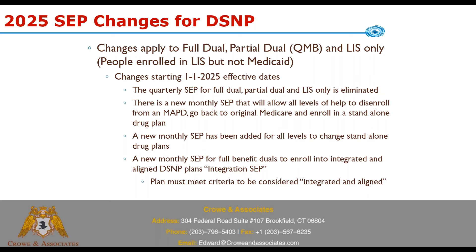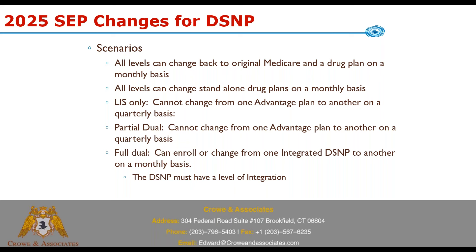There's also a new monthly SEP for full benefit duals to enroll into integrated and aligned D-SNP plans — they call it the Integration SEP. With that SEP you can take somebody who's a full dual and move them into a plan that is considered integrated and aligned. The plan's got to meet certain criteria to be classified that way for you to utilize that SEP, and it will only accept enrollment if it's going into an aligned integrated plan.